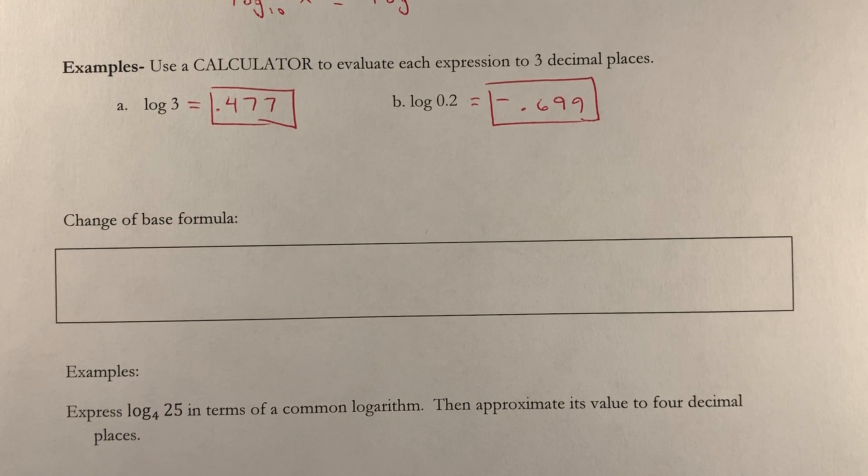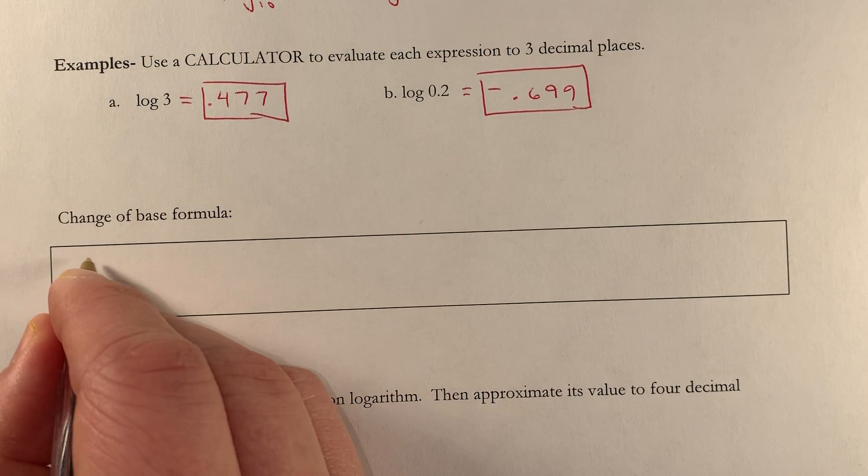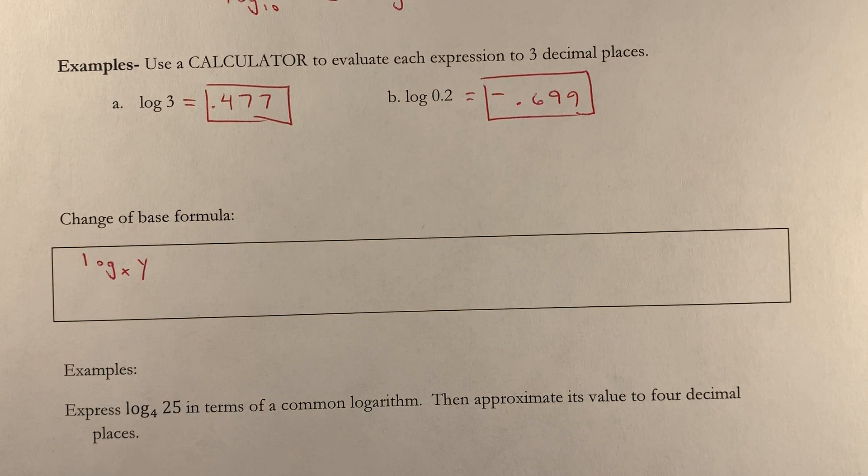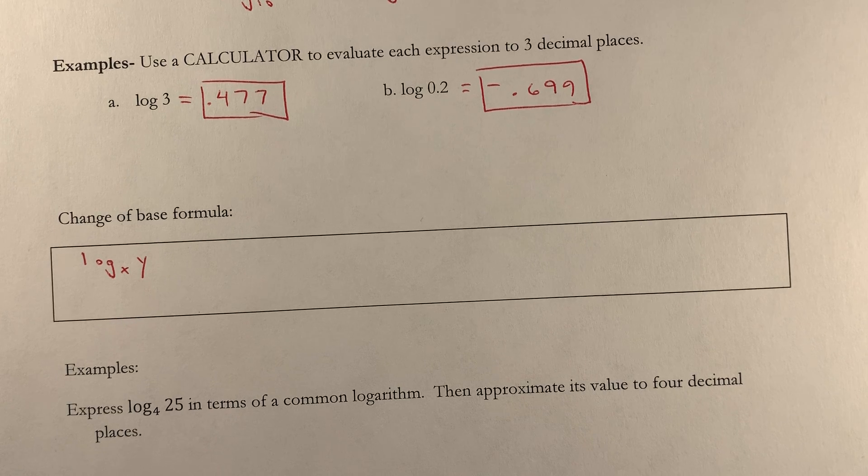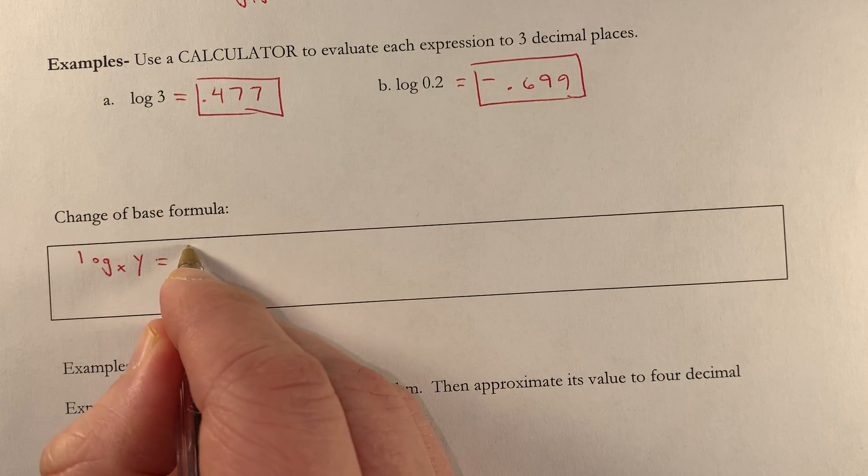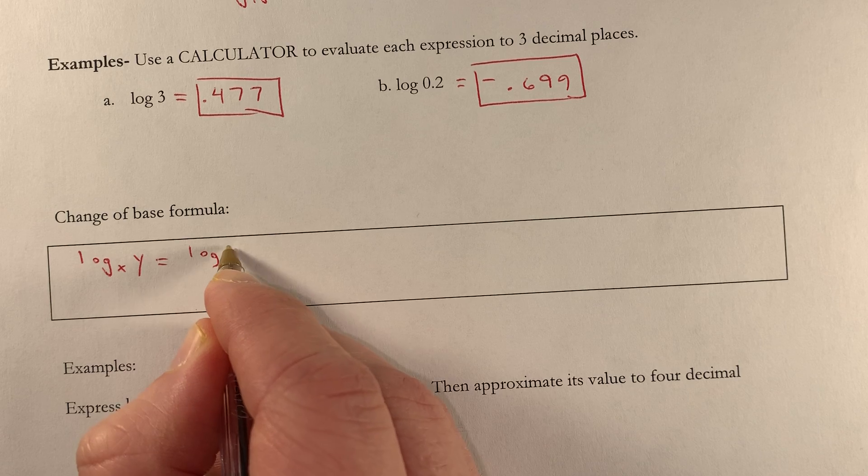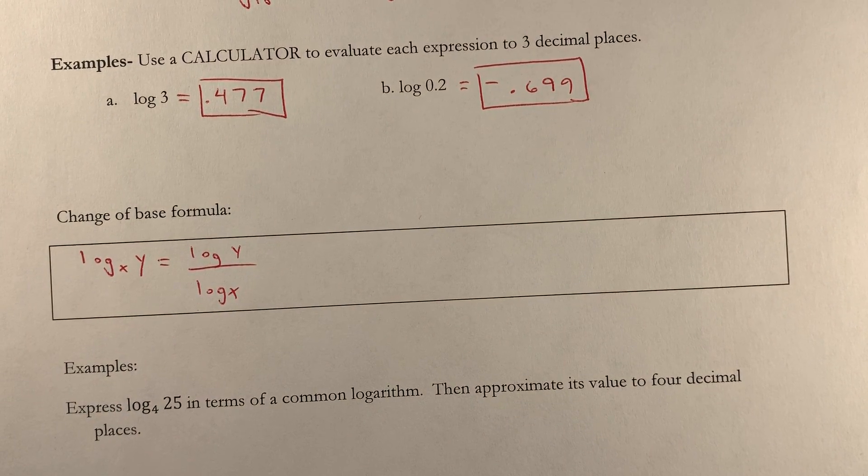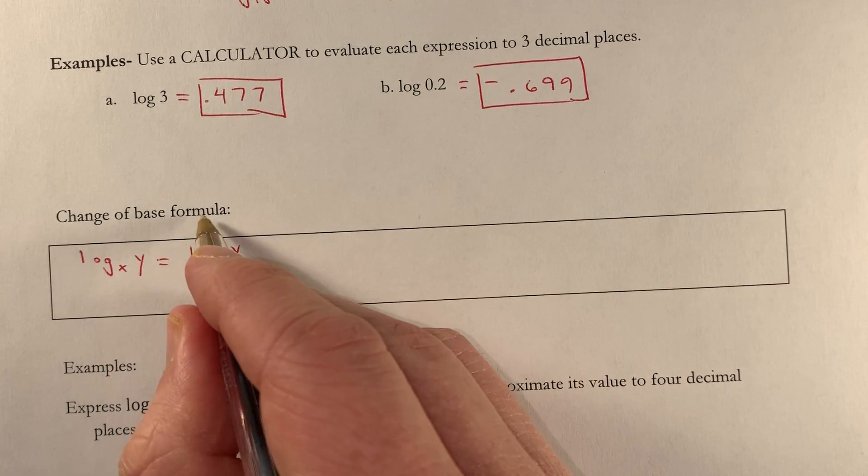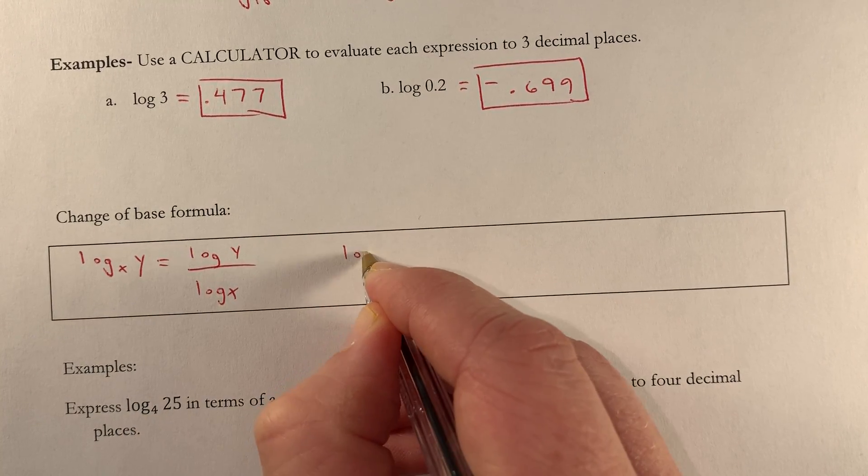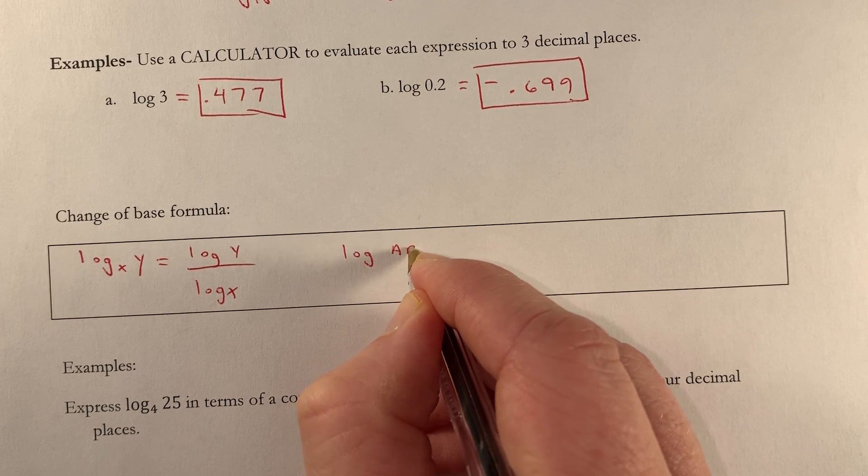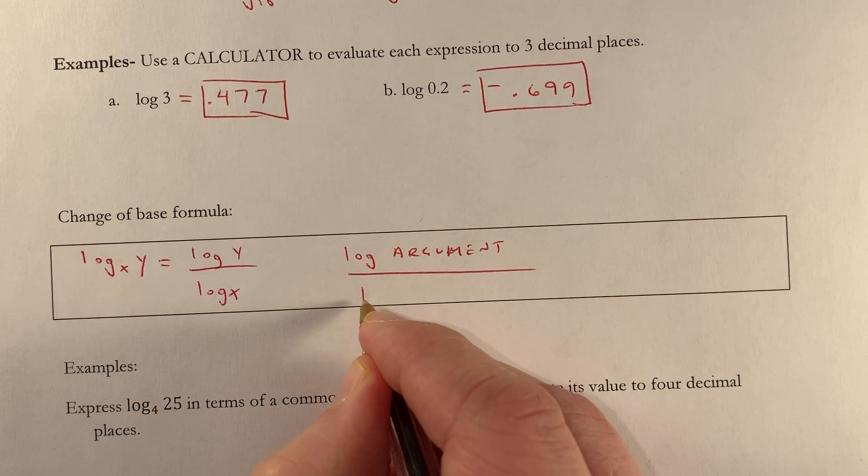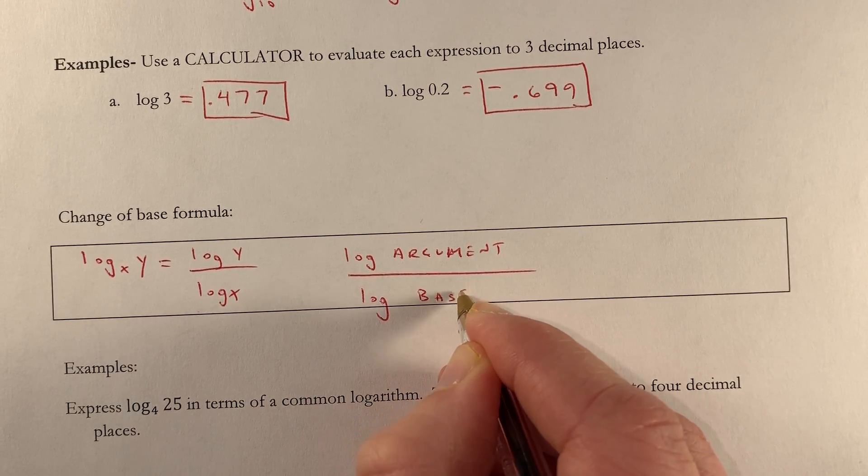Now the change of base formula. When you have a log in this form, log base x of y, you can evaluate that using common logs, using the change of base formula: log of the argument, which is y, over log of the base, which is x. We're going to use this extra space over here to write that the formula is log of the argument divided by log of the base.